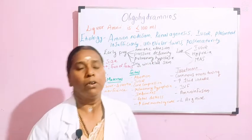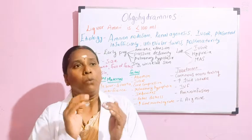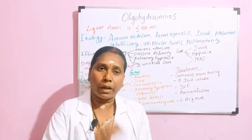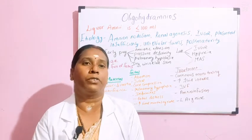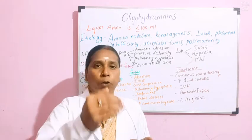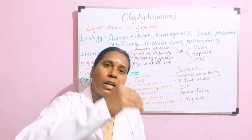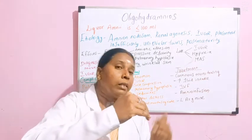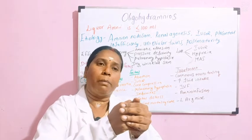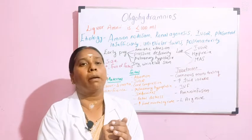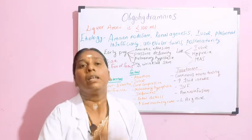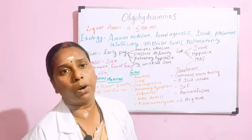Then we have pressure deformity. When amniotic fluid secretion is very less, it causes decreased movement of the fetus. If the baby's foot is in a flexed position and there is no adequate fluid, the foot remains and grows in that position, ending with club foot. All these types of abnormalities take place when there is oligohydramnios.